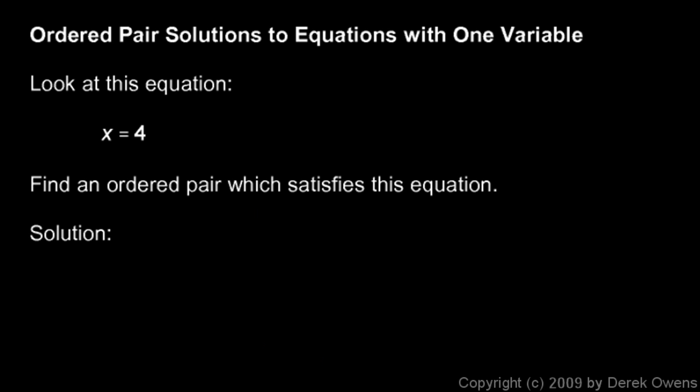And last of all, we'll talk about ordered pair solutions to equations with one variable. So look at this equation, x equals 4. This equation only has one variable, x. And we're told to find an ordered pair.